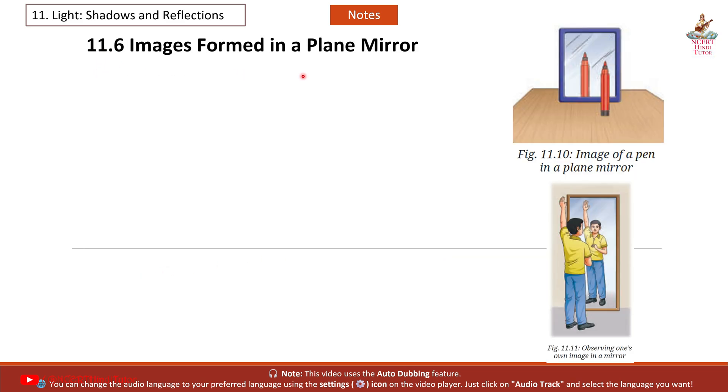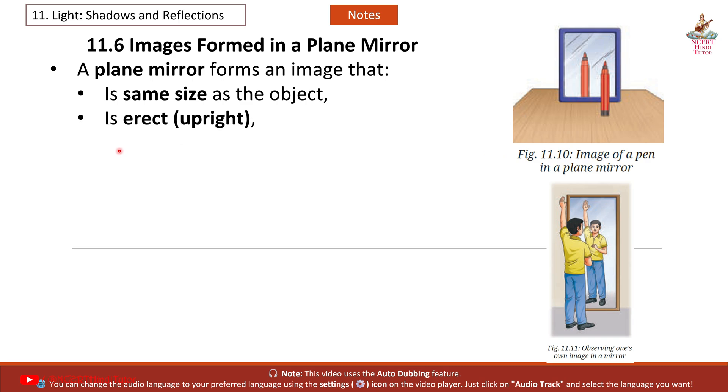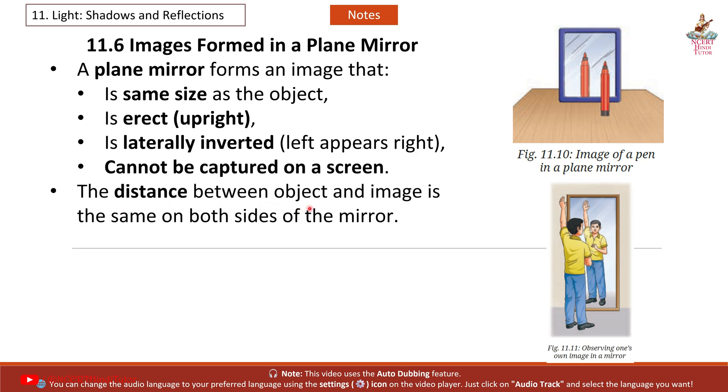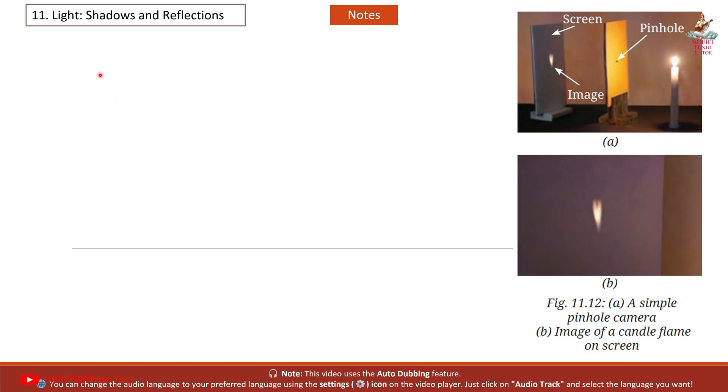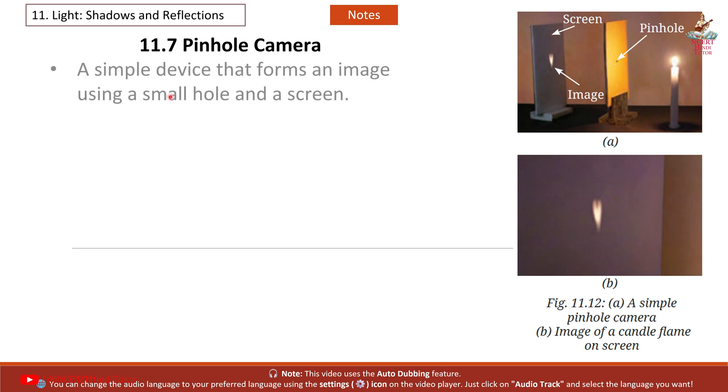11.6 Images formed in a plane mirror. A plane mirror forms an image that is same size as the object, is erect, upright, is laterally inverted (left appears right), and cannot be captured on a screen. The distance between object and image is the same on both sides of the mirror. Example: Ambulance is written in reverse, so it appears correctly in rear view mirrors.